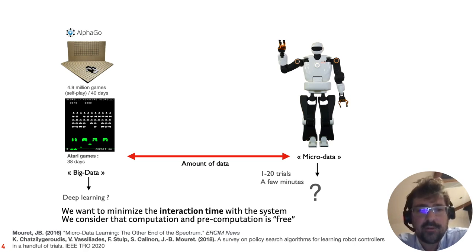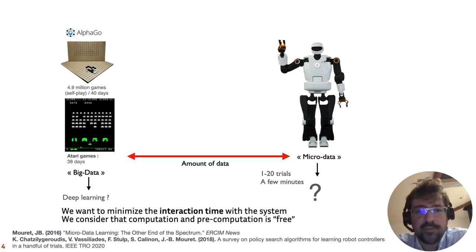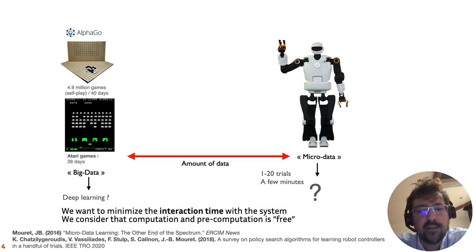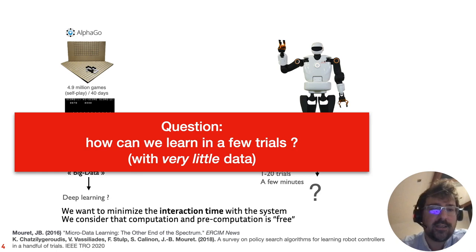The main hypothesis in this kind of work is that we want to minimize the interaction time with the system — that's the only thing that really matters. We consider that computation or pre-computation is essentially free, so we can spend as much time as we want pre-computing. But we want to interact with the system as little as possible. The question is: how can we learn with that little data?